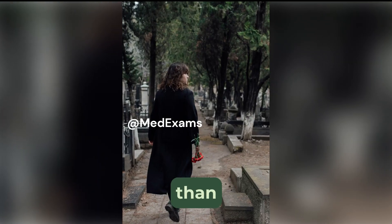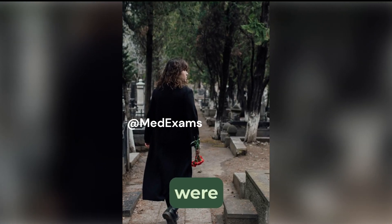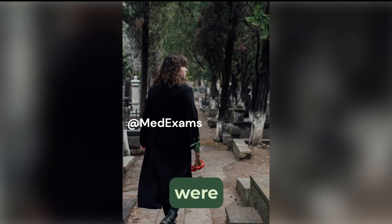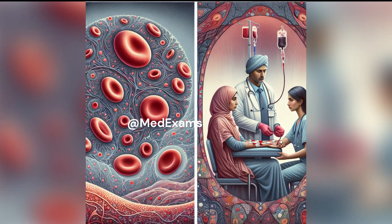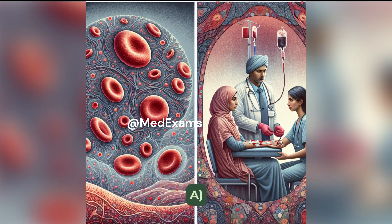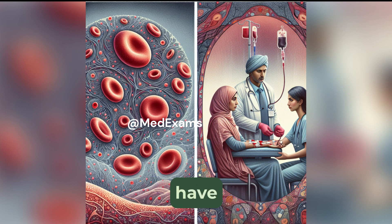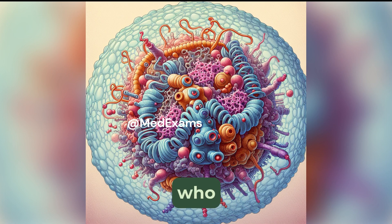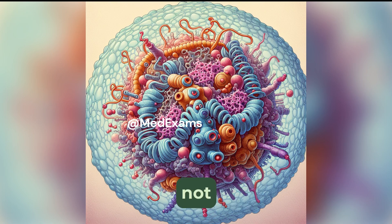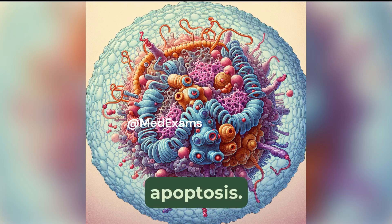If you chose any option other than C, you were incorrect. Let's briefly discuss the other options. Choice A: hemocytorin accumulation is common in patients who have hemolytic anemia or who undergo frequent blood transfusions. It is not associated with apoptosis.